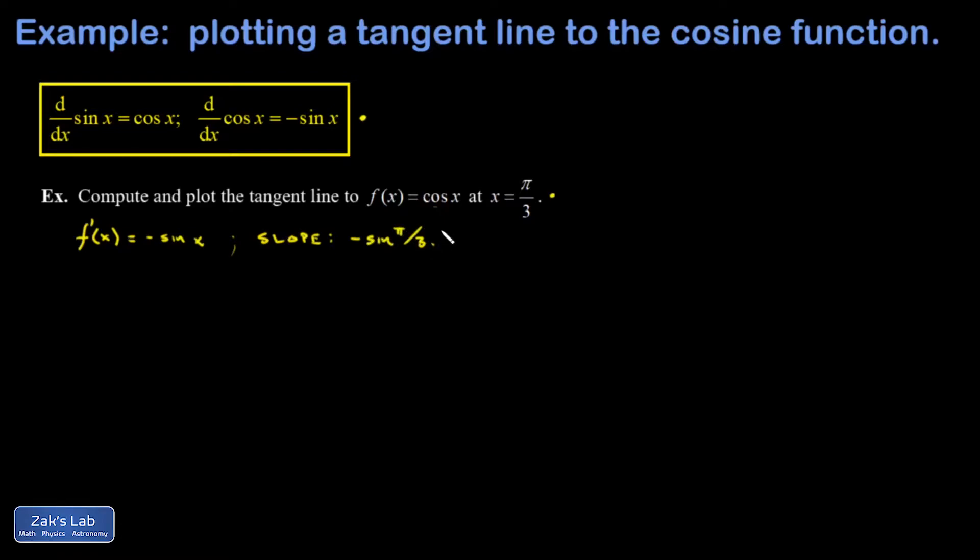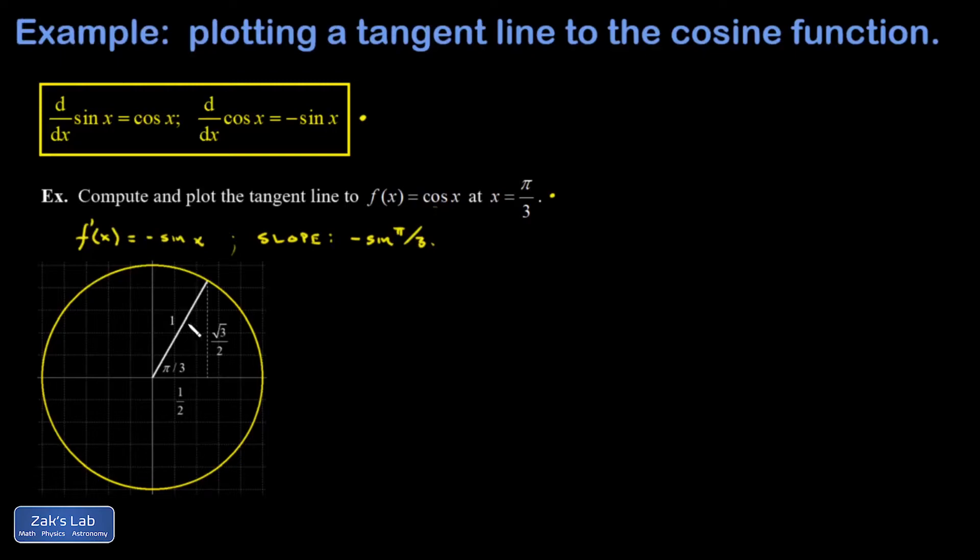And to remind you real quick what the value of sine pi over 3 is, I'll just pop in a picture of the unit circle. And so we're looking at the angle pi over 3. Another way of saying that is 60 degrees. This forms the asymmetric triangle that's shown in the picture. The long side of that is always root 3 over 2, and the short side is 1 half.